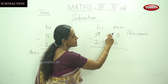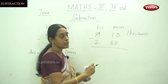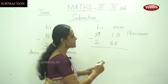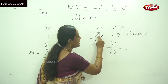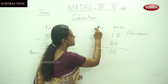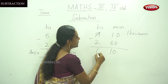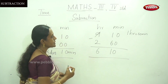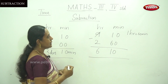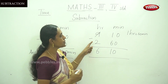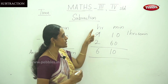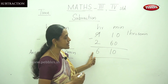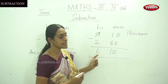That is 70 minutes. 70 minus 60, that is 10 minutes. And this is 8 hours. And 8 minus 2, that is 6. So that is the answer for hours.